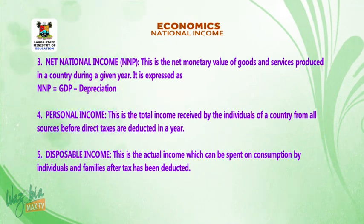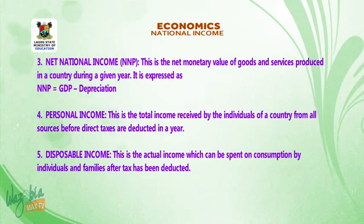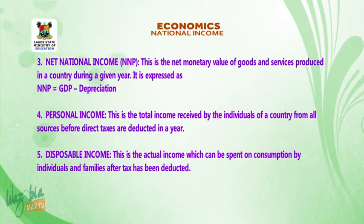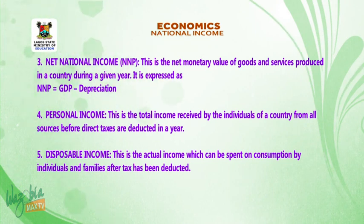4. Personal income. This is the total income received by the individuals of a country from all sources before direct taxes are deducted in a year. 5. Disposable income. This is the actual income which can be spent on consumption by individuals and families after tax has been deducted.